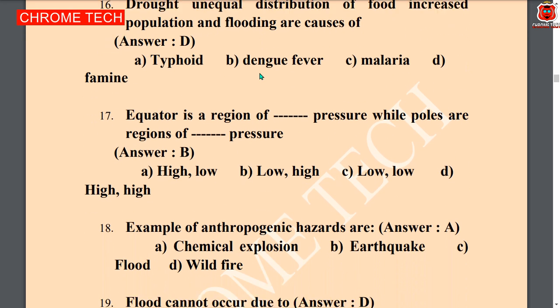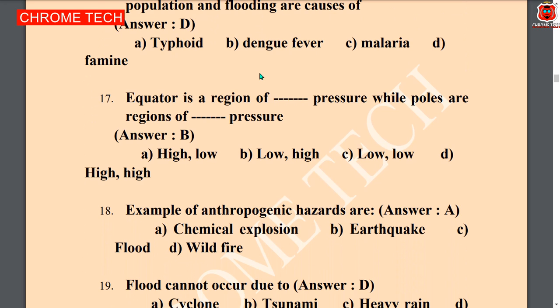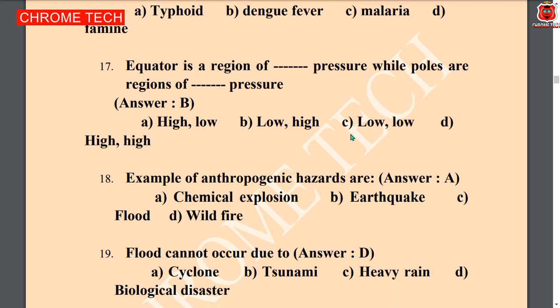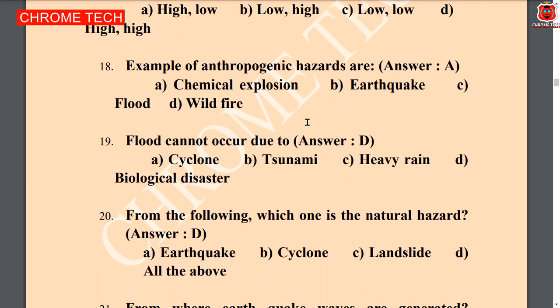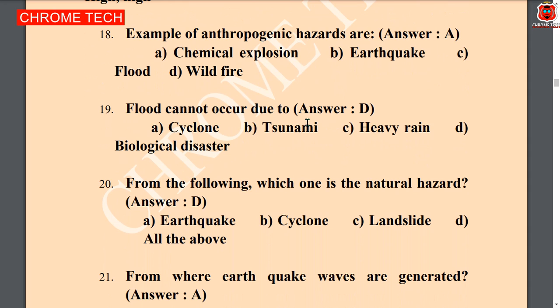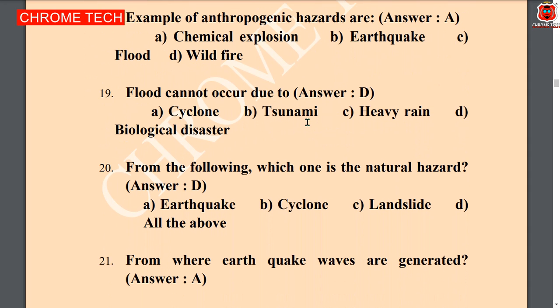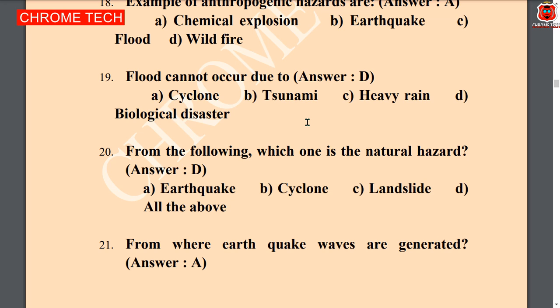Next question: unequal distribution of food, increased population, and flooding are causes of — famine. Famine is the correct answer. Next question: the equator is a region of — low pressure, while the poles are a region of — high pressure. Option B, low pressure and high pressure, is the correct answer. Example of anthropogenic hazards are — chemical explosion is the correct answer.